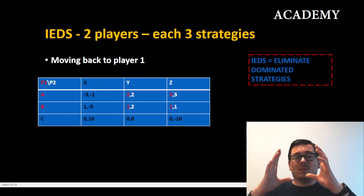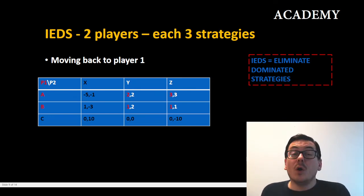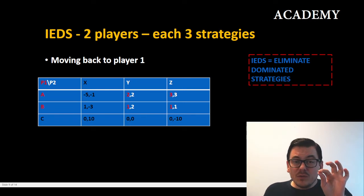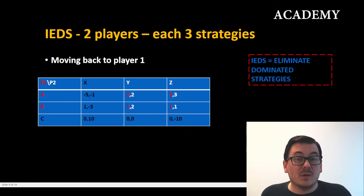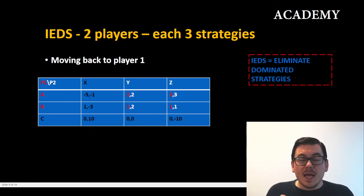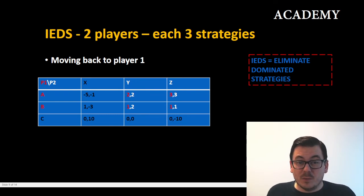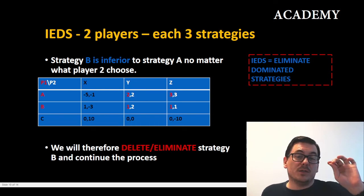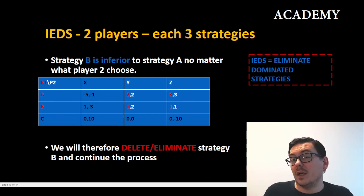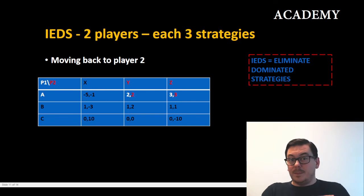We continue back to player one. We've now deleted strategy C and strategy X, so the game becomes smaller and smaller. Player one can now choose between A and B. With X removed, strategy A gives player one two or three, while strategy B gives one no matter what player two plays. Therefore we can state that B is inferior to strategy A no matter what player two plays, and we can delete strategy B.